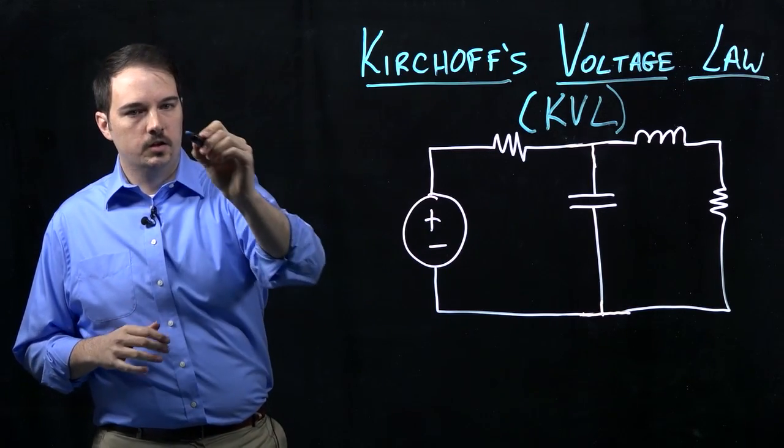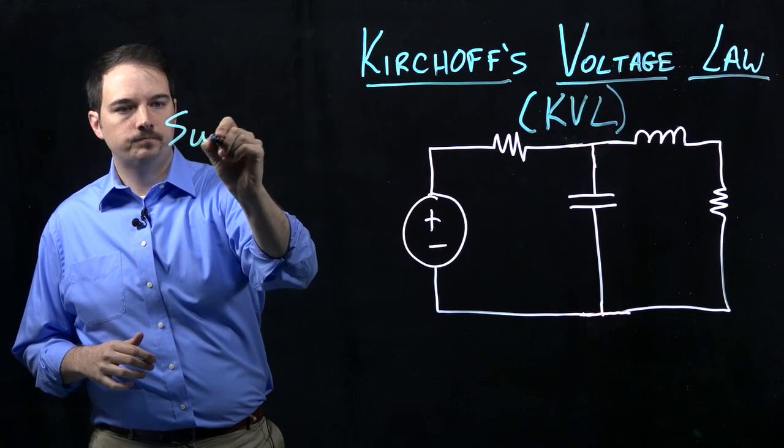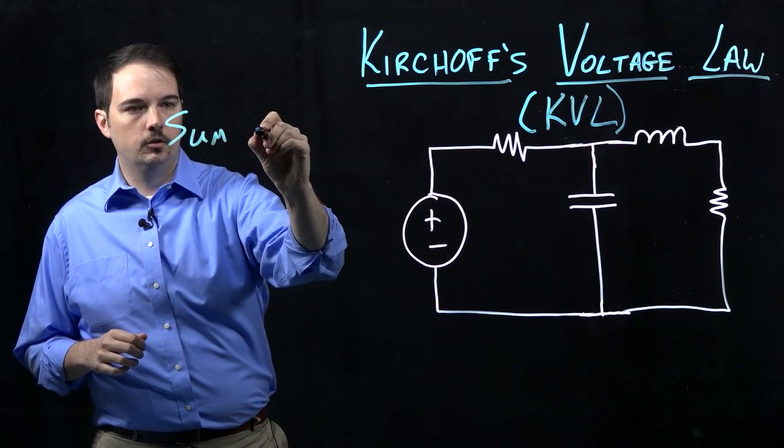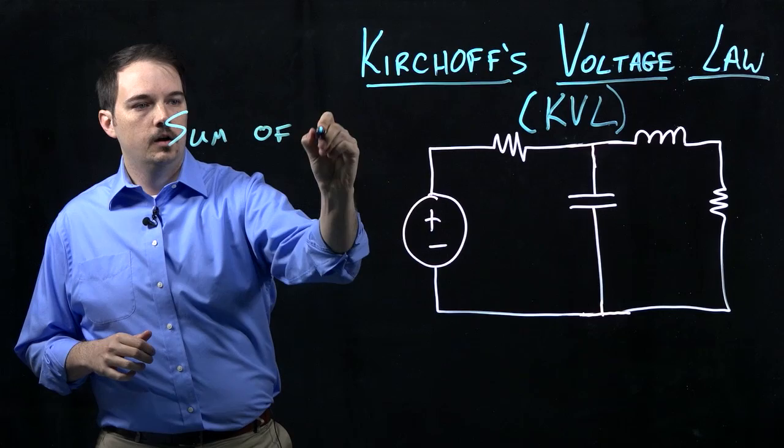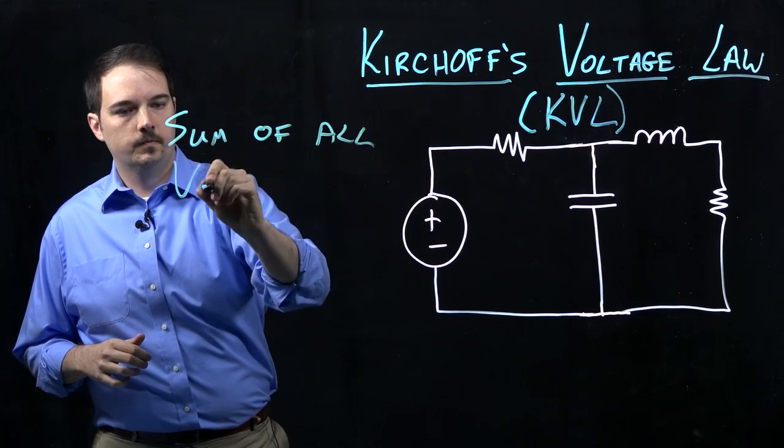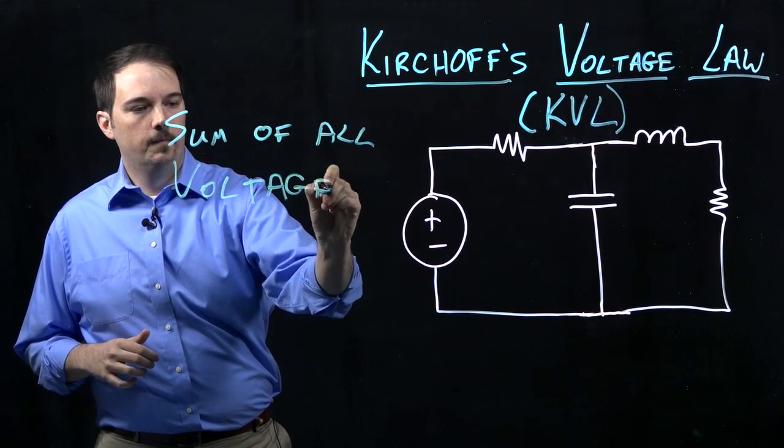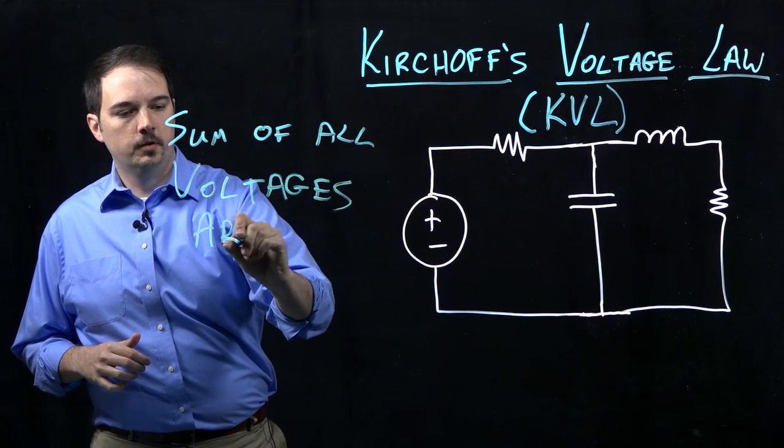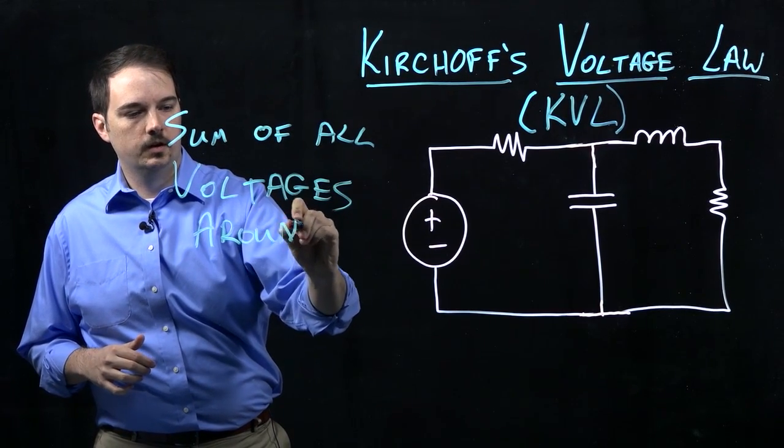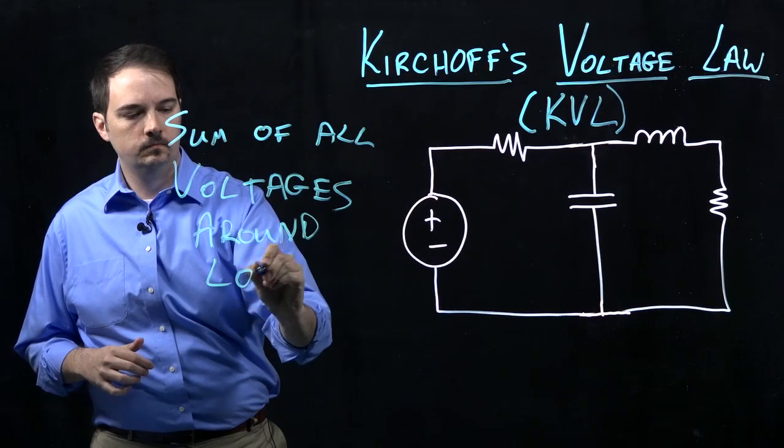So what the law tells us specifically is that the sum, very similar to Kirchhoff's current law, but now with voltages, is the sum of all the voltages around a given loop has to be equal to zero.